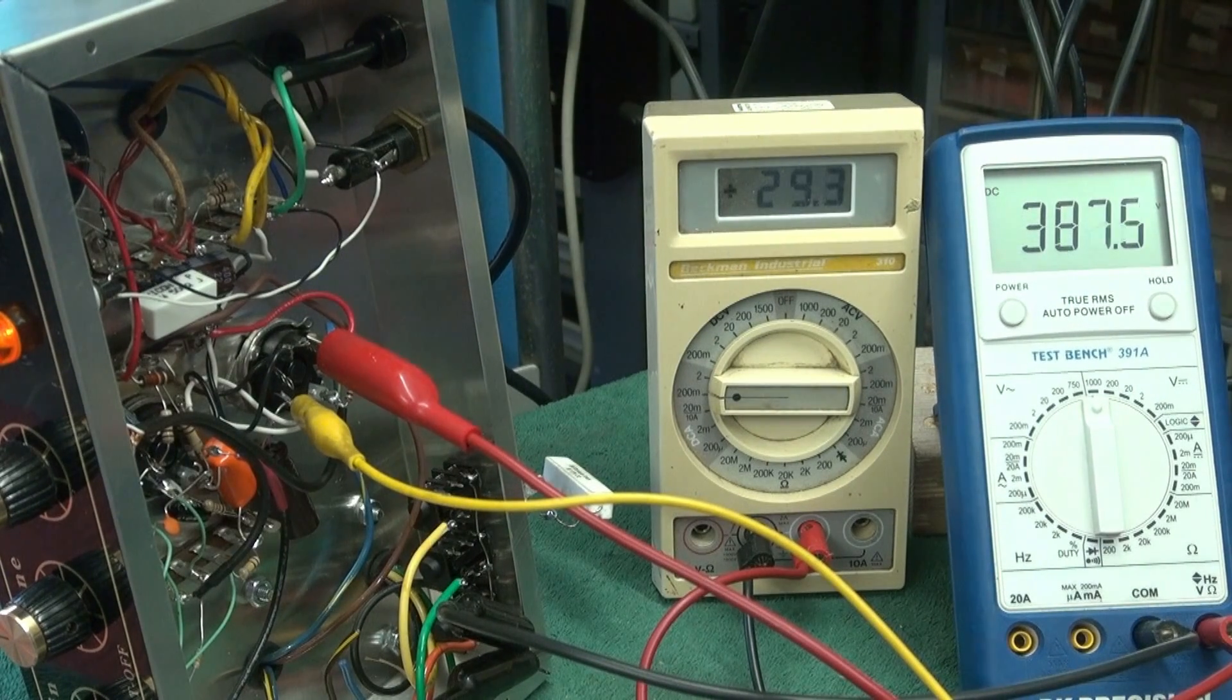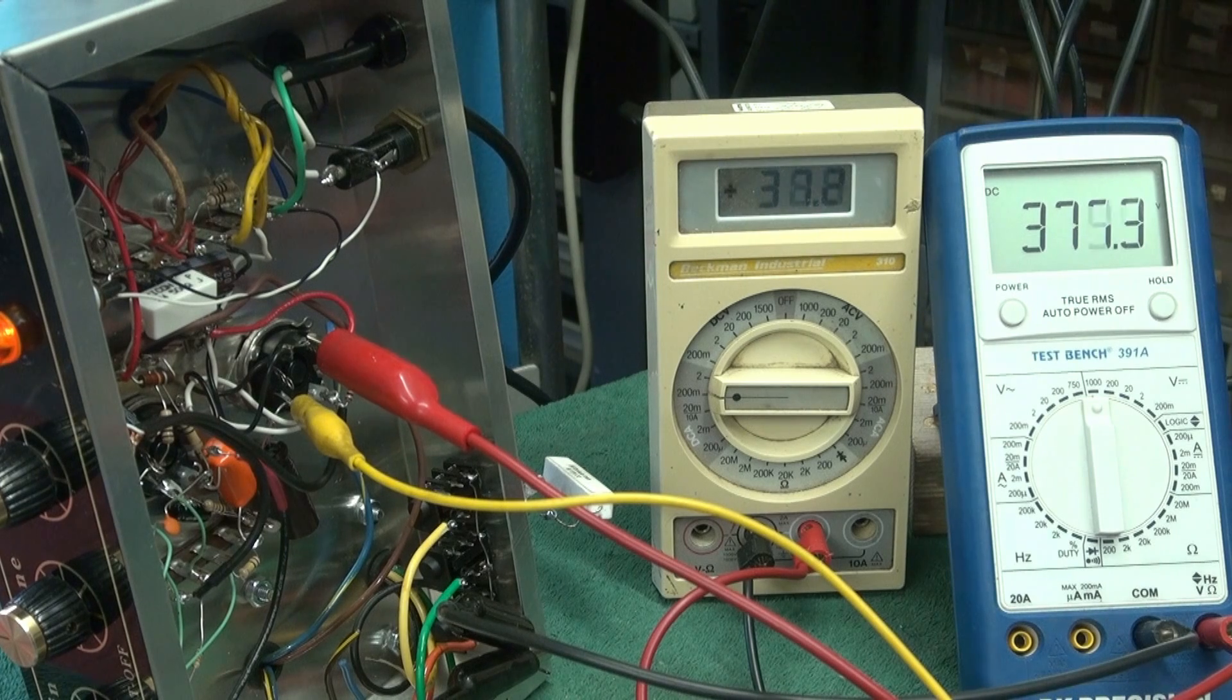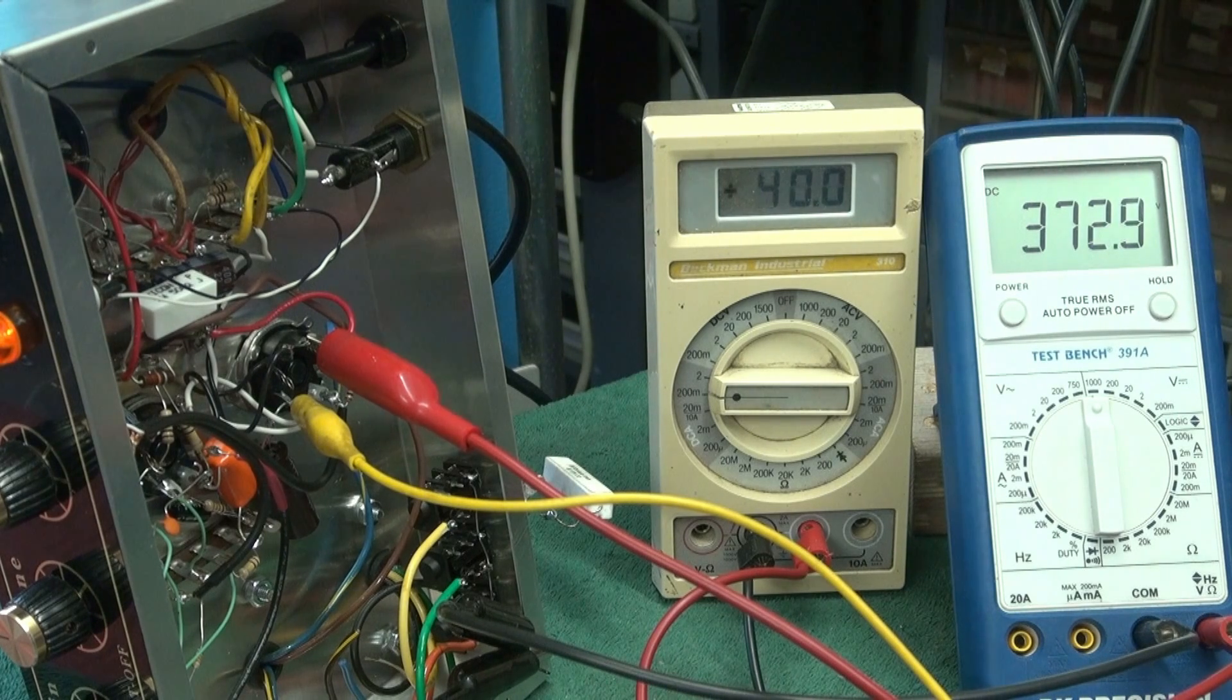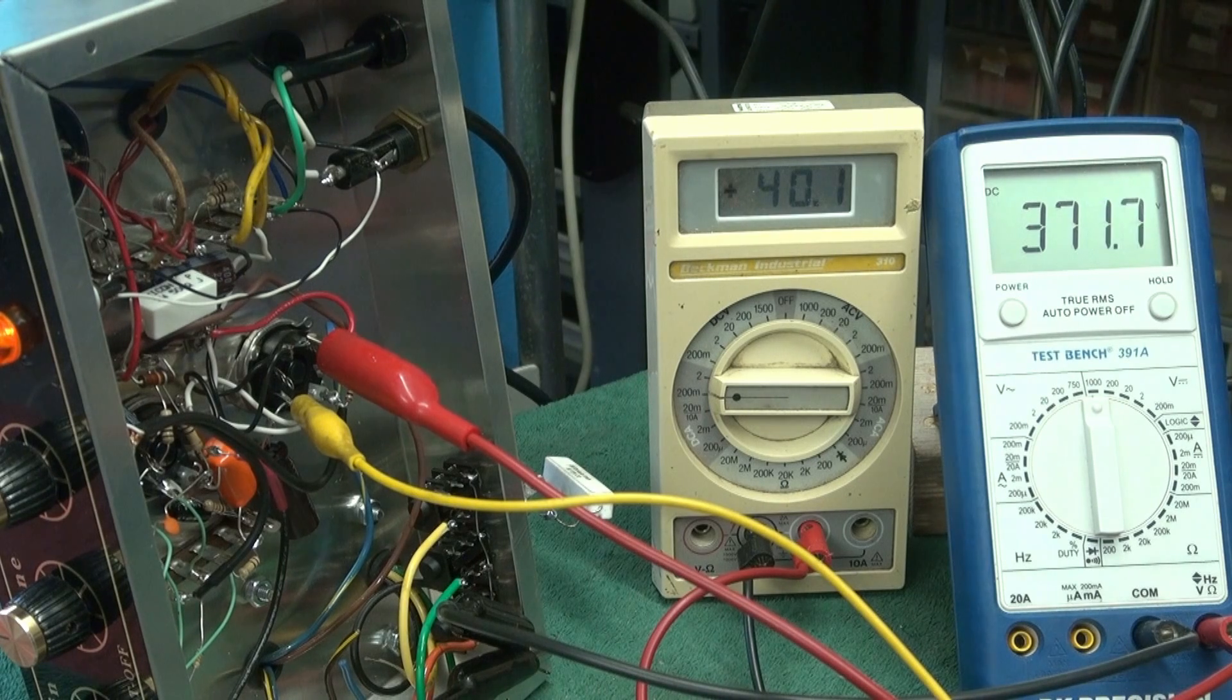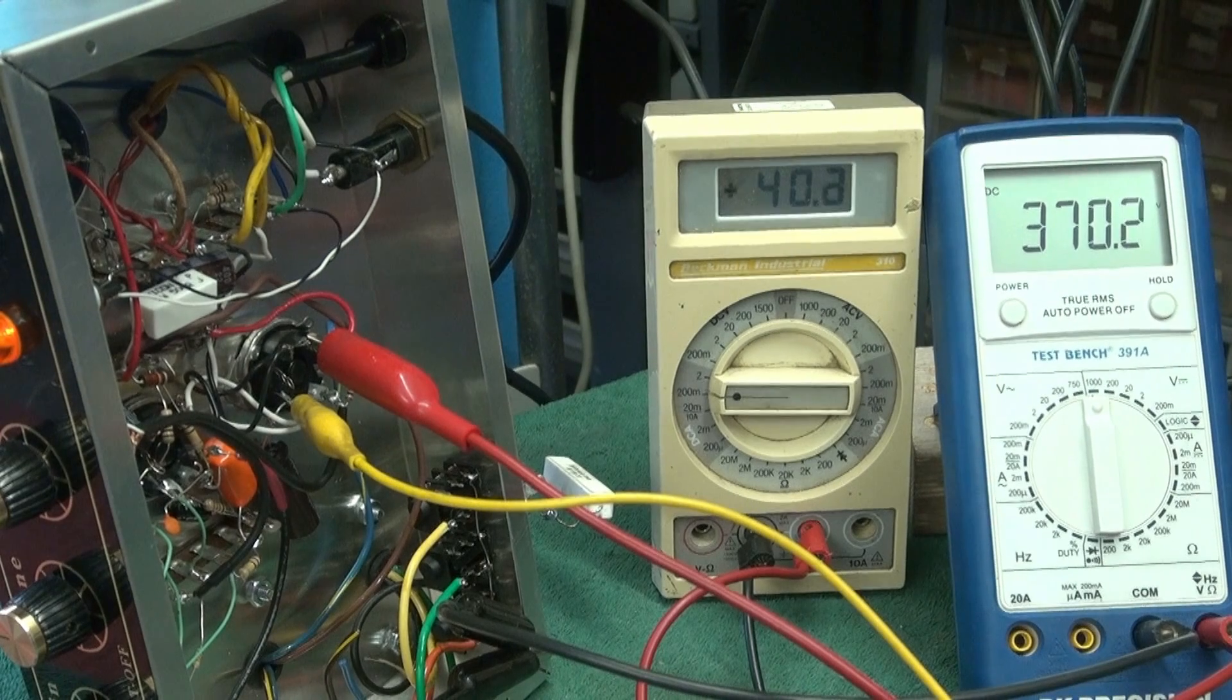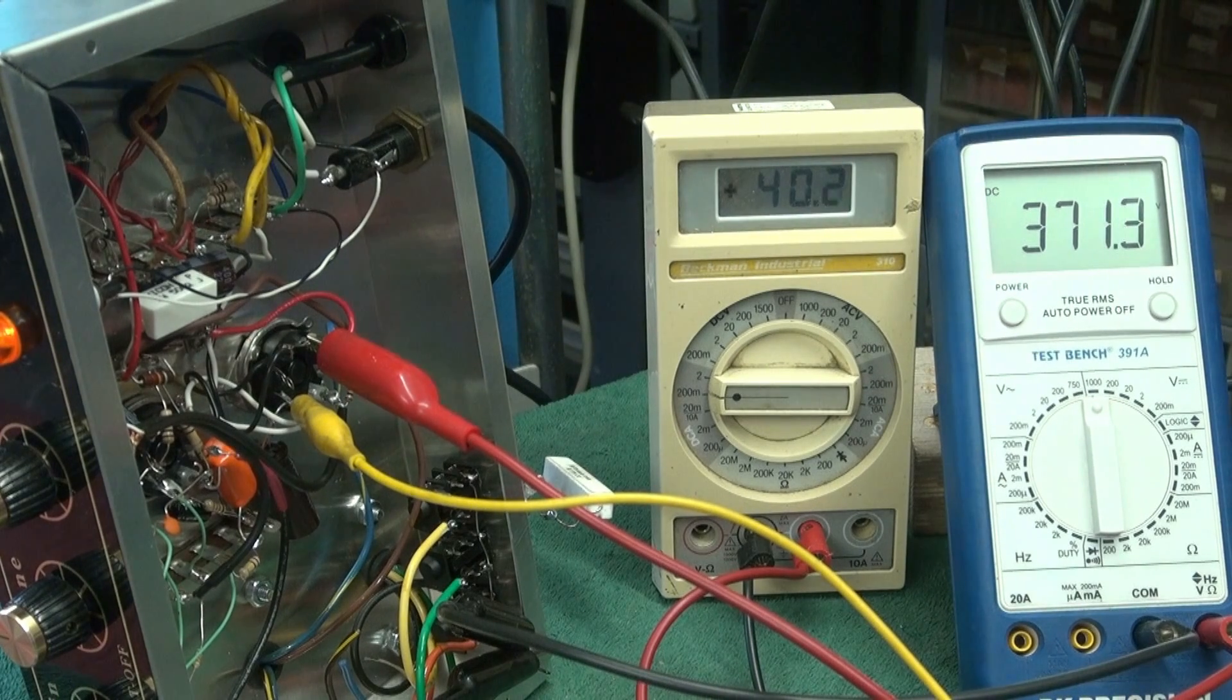She's ramping back up. My current's going up a little higher now than what it was before. So I'm at about 39. Boom, 40 mils. There she is. 372 volts. So if you calculate that you'll see that the wattage dissipation on this amp is about 80 to 90 percent of what the tube is rated at. And that's a good level to be at for class A operation.